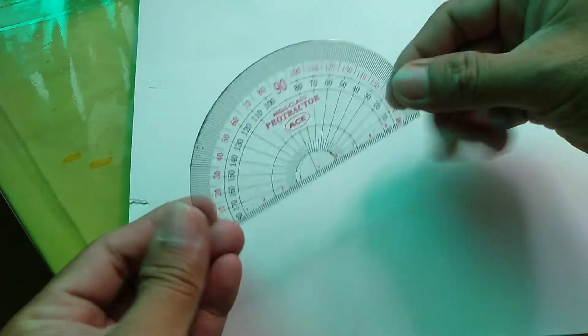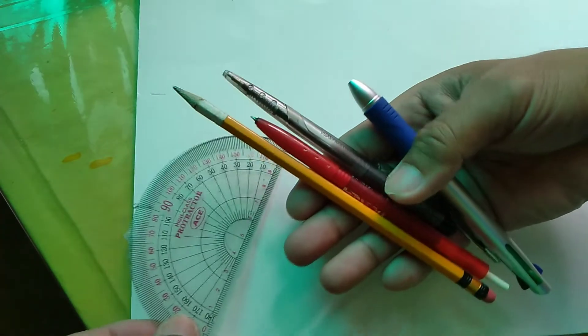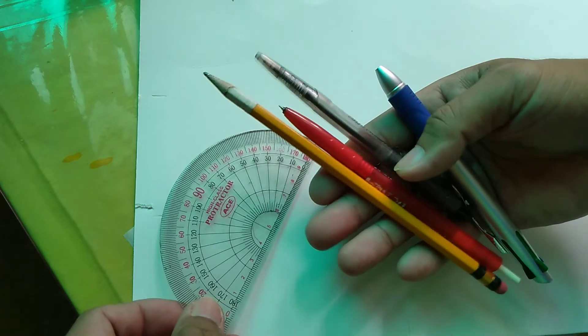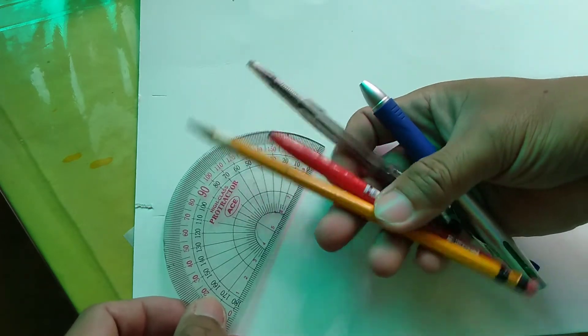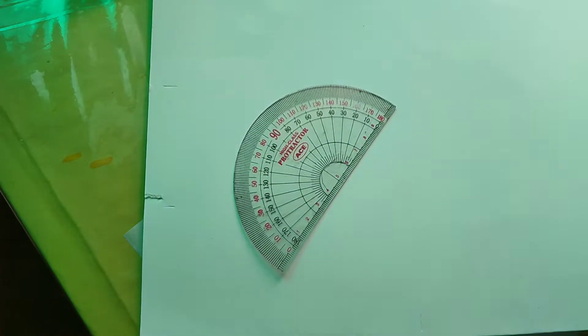Second is a protractor. Then next are writing materials: pencil, red ballpen, black ballpen, green and blue, or any crayons. You can use crayons or any coloring materials. So let's start.